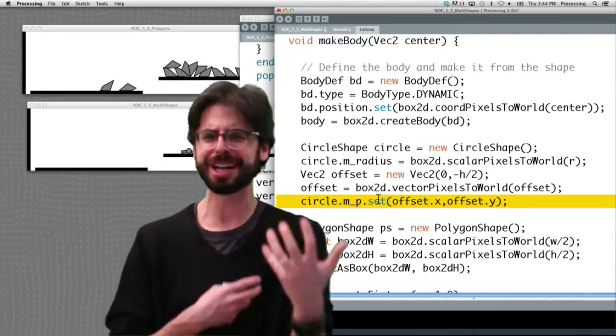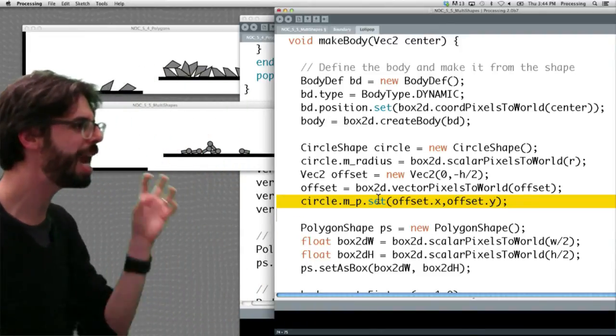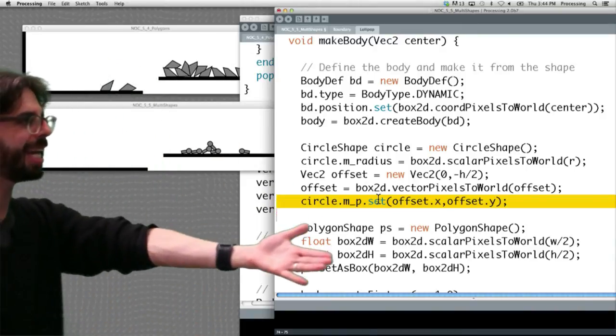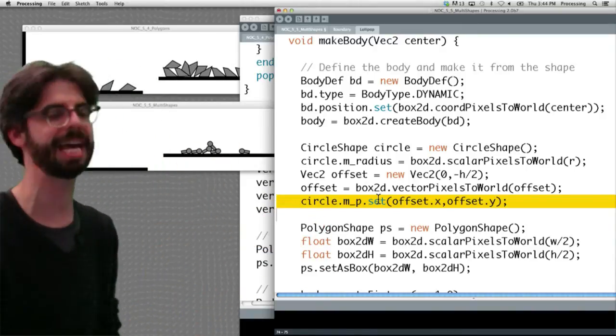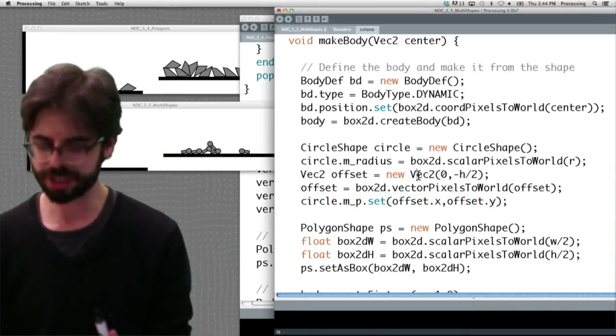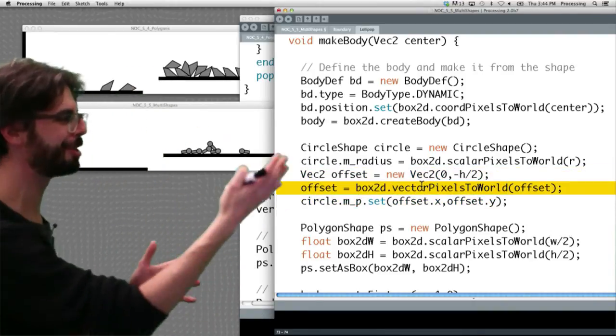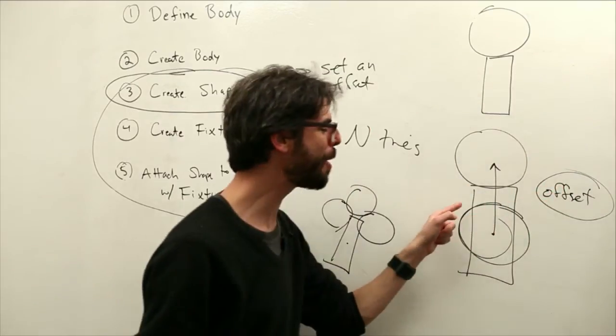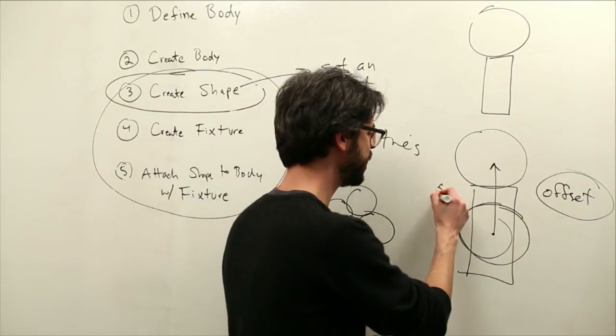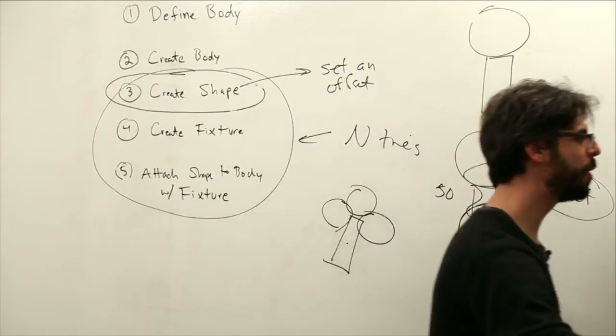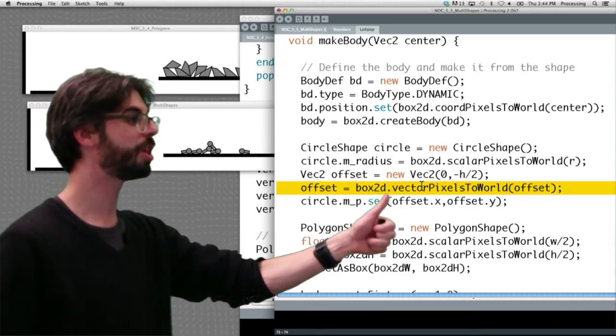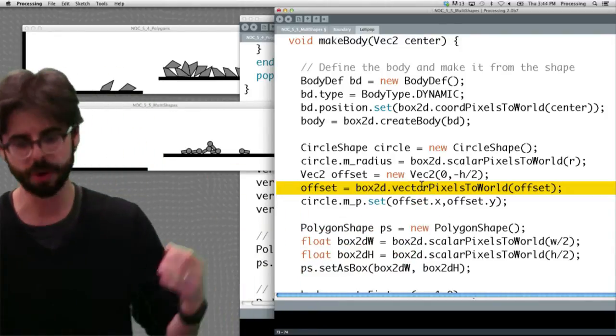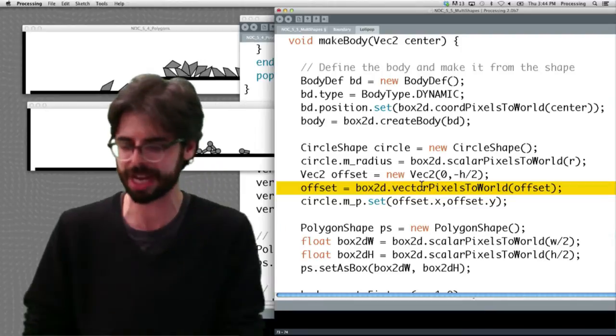But a shape object has a variable called m underscore p, which is its offset position as a vector. And we can set it to our offset, which we had previously defined. Oh no, we defined it right here and converted it. We made a vector in pixels, then we converted it, and then we assigned it. So there's all these steps. This is that same thing. This offset, we're probably thinking of it as pixels. Like, oh, this circle is 50 pixels above the rectangle. So if we look at that right here, we create the vector with a height above that. Then we have to convert it from pixels to world and then set that as its offset. So there's a lot of these steps, a lot of these gobbledygook kind of steps to get comfort with.